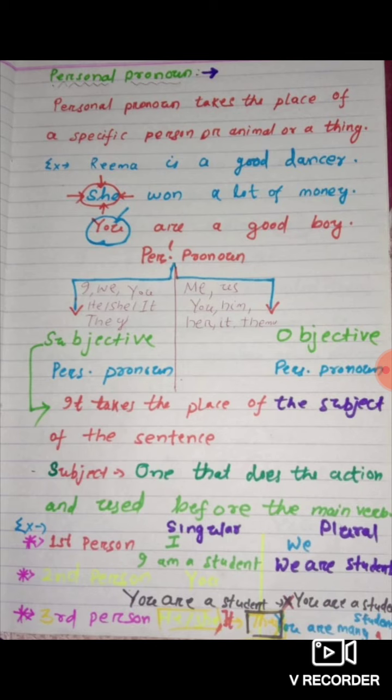Moving down to the second person — it is 'you.' The second person is whom you speak to, whom you converse with. Both the singular and plural form of the second person are the same — 'you.' You can use 'you' in both singular and plural form. For example: You are many students. You are many boys. You are good teachers.